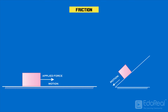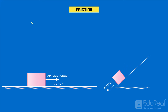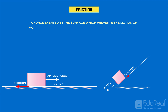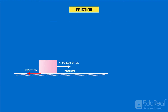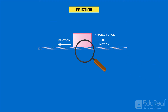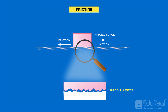So, friction, or force of friction, can be defined as a force exerted by the surface which prevents the motion of the body, and its direction is opposite to the motion of the body. The frictional force always acts tangent to the surface at points of contact with other bodies. Friction is caused due to the irregularities present on the contacting surfaces.